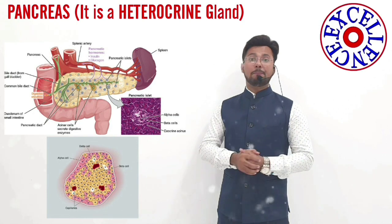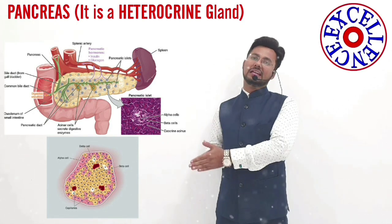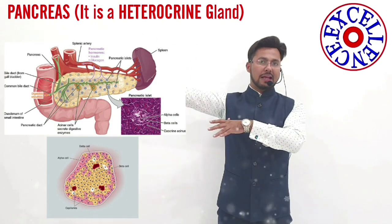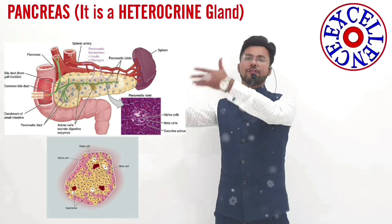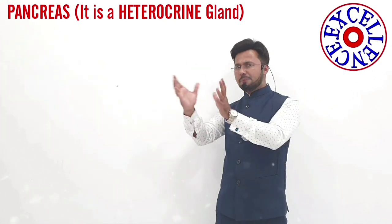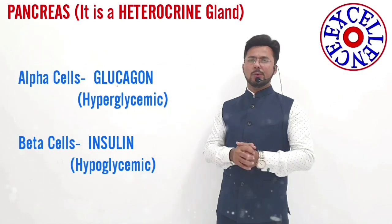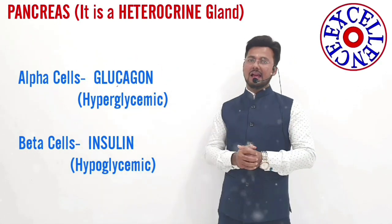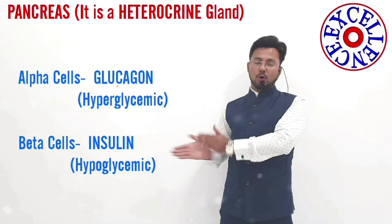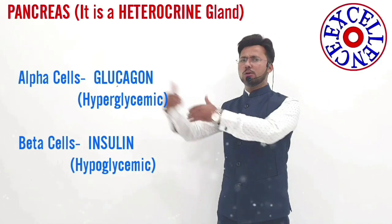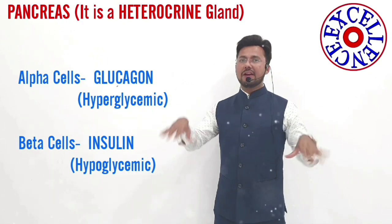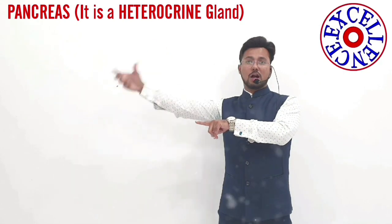The next gland in our list is the pancreas, and the pancreas is the only heterocrine gland in the human body. It has an exocrine part — which releases digestive enzymes as discussed previously — and an endocrine part concerned with the release of hormones. The endocrine part of the pancreas is known as the islets of Langerhans, which has two primary kinds of cells: the alpha cell and the beta cell. The alpha cell releases a hormone called glucagon, and the beta cell releases a hormone called insulin. Both hormones work in a coordinated manner to regulate the glucose level in the blood.